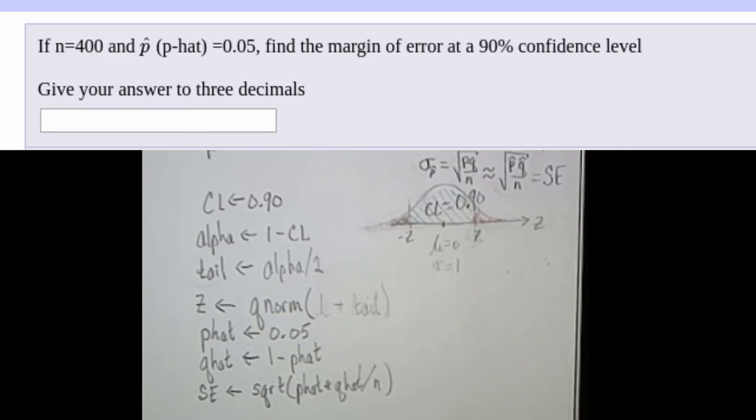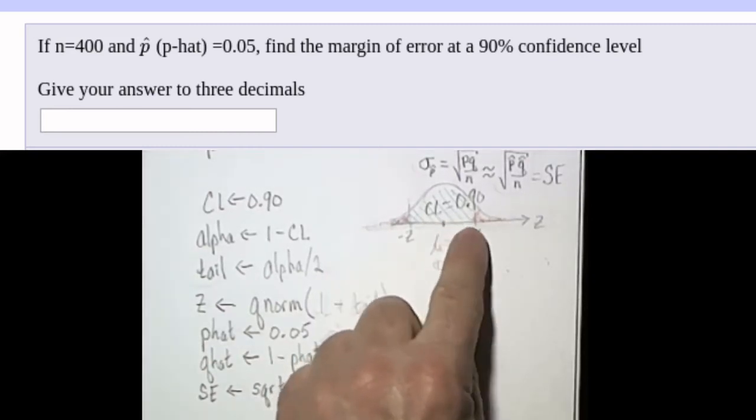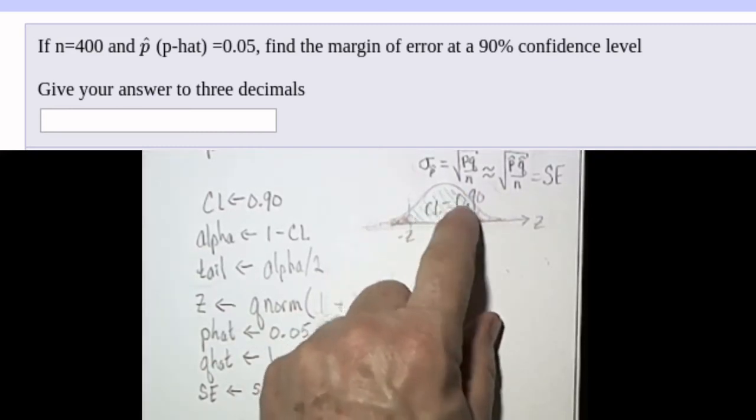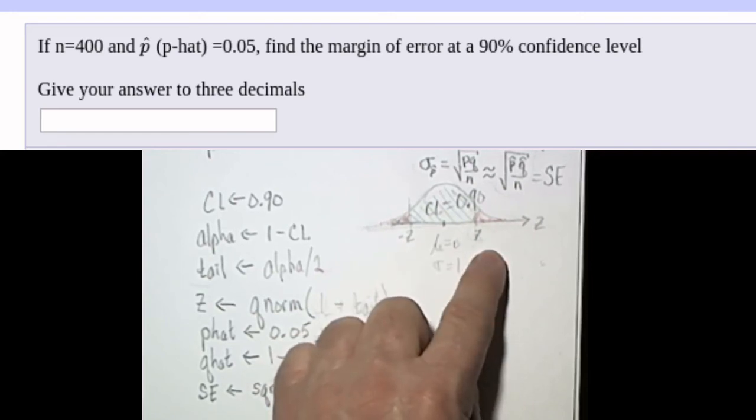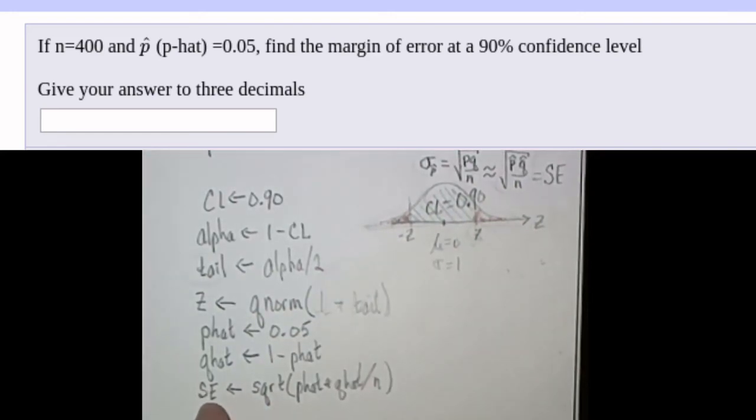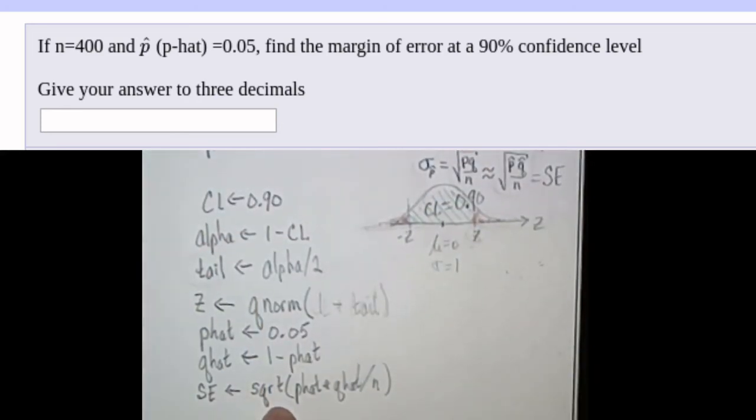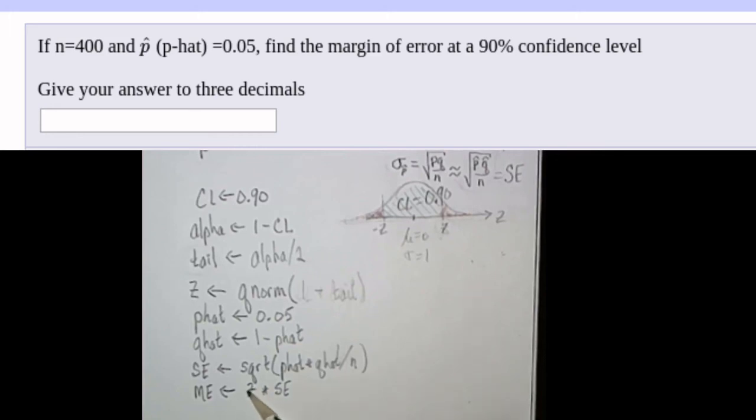Now here's what we know at this point. We know Z, which tells the number of standard deviations we would need to be away from the mean to have 90% of the population between minus Z and Z. We know that our best estimate for the standard deviation of this distribution is SE. Our margin of error is Z times SE.